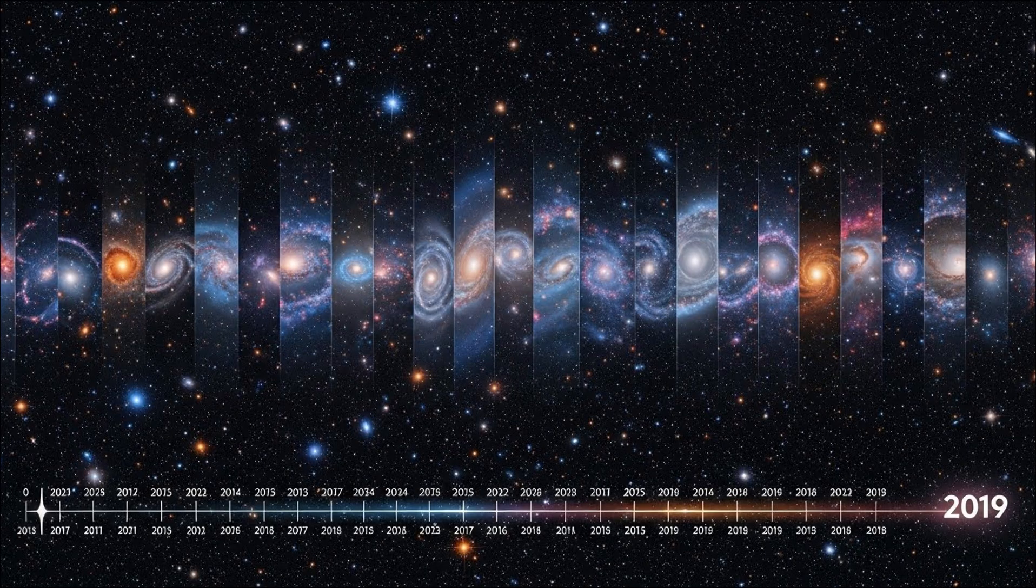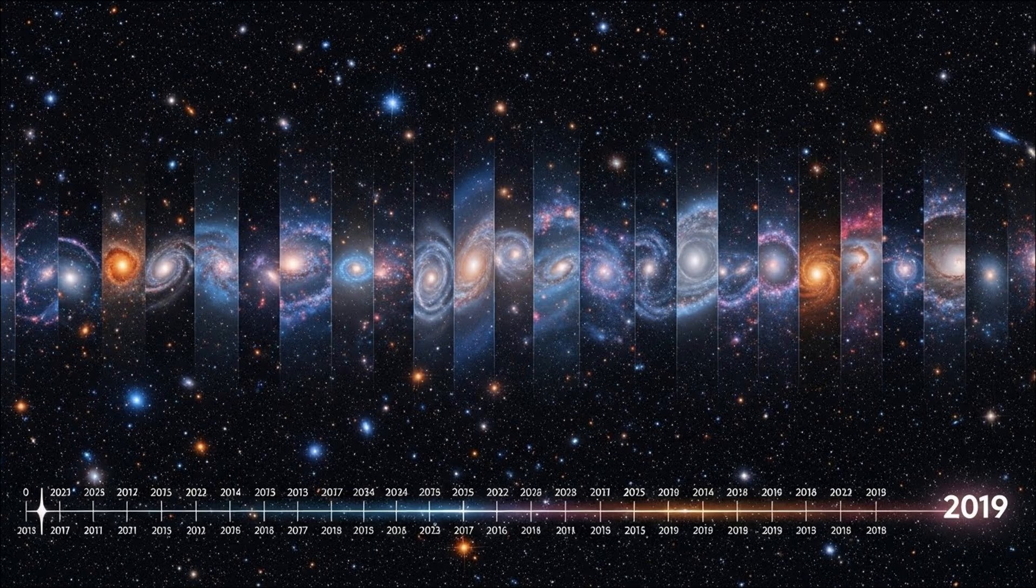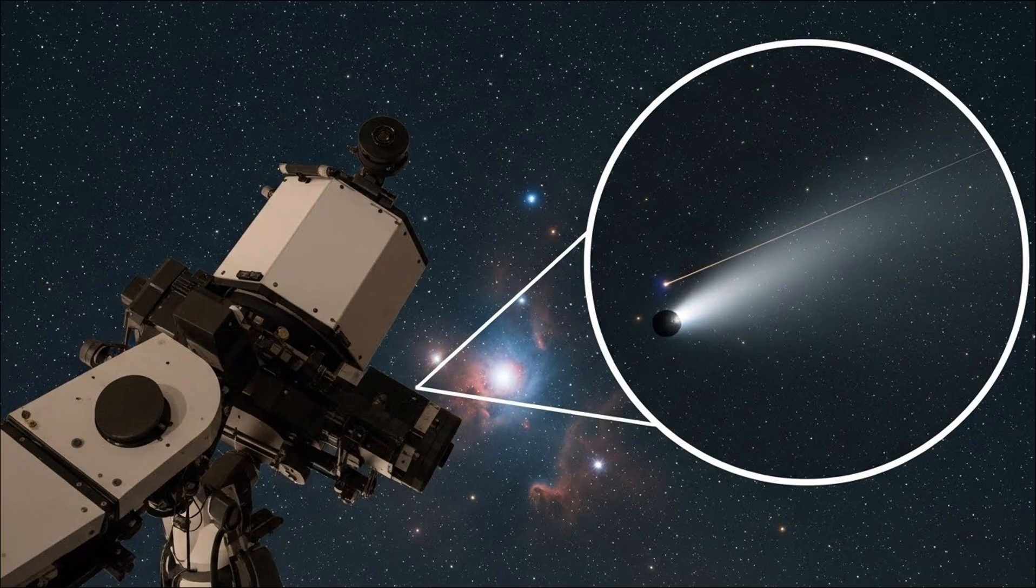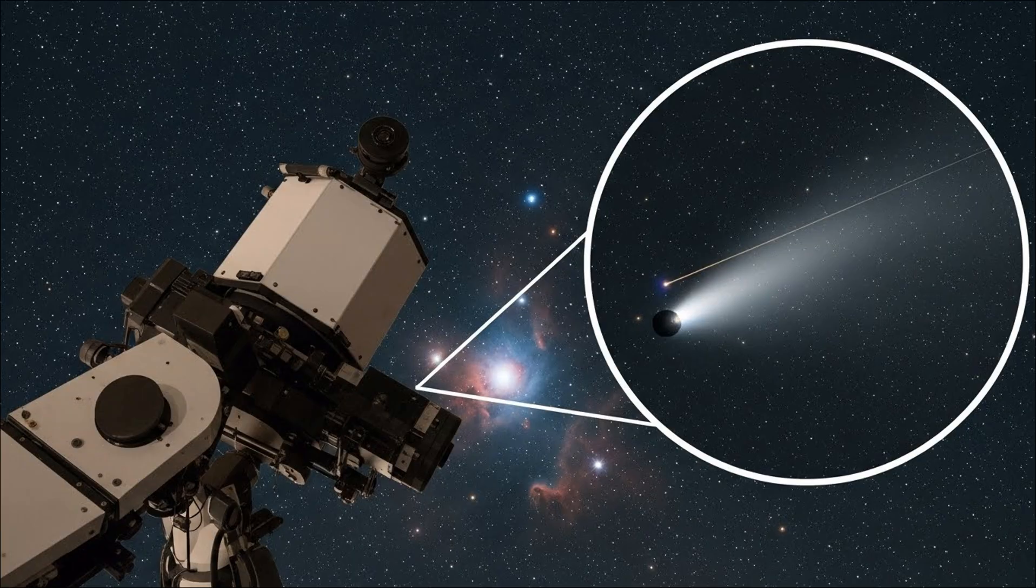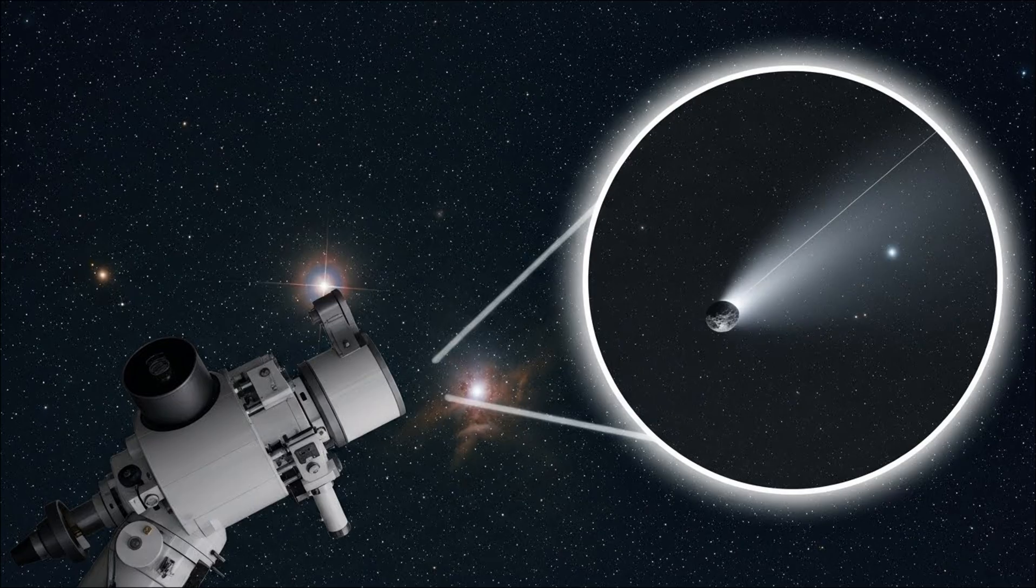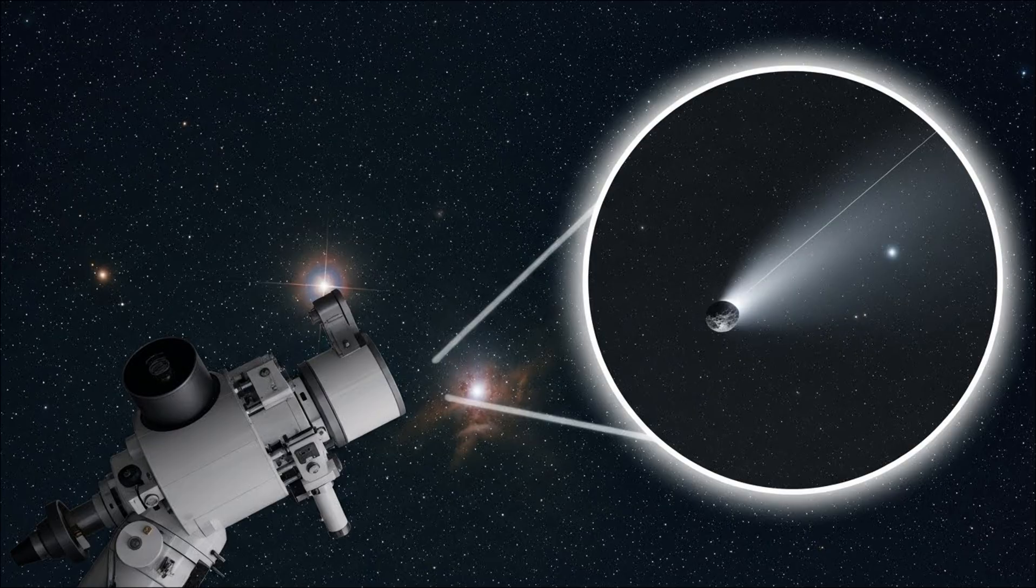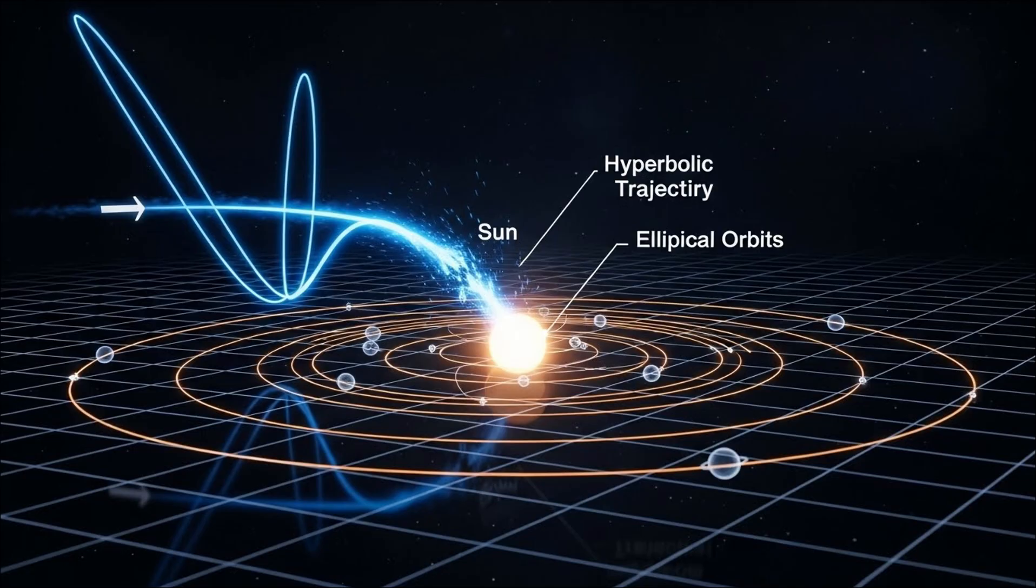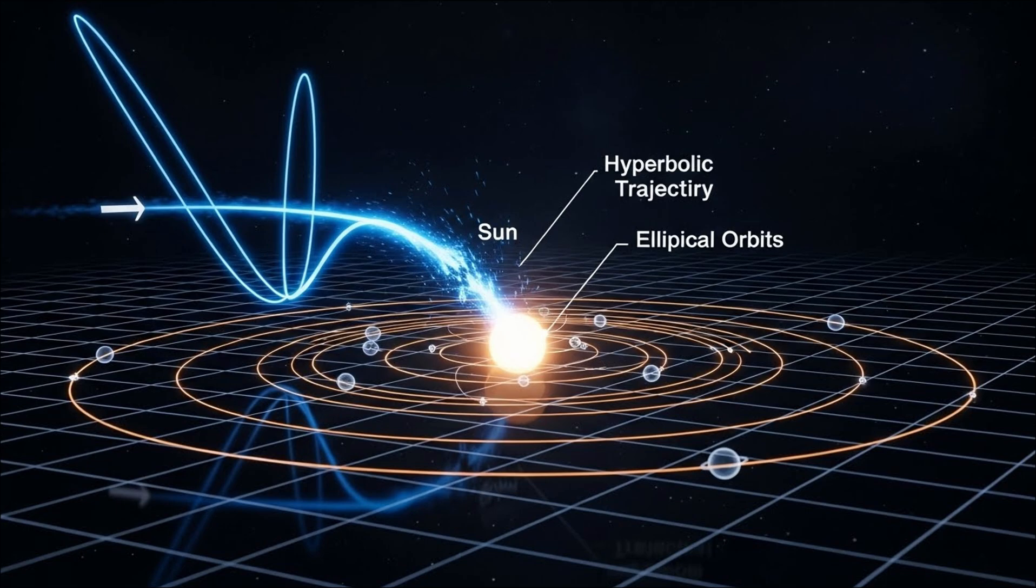To understand what happened, we need to go back to December 2019. That's when astronomer Gennadyi Borisov, using a telescope he built himself in Crimea, noticed something unusual in the night sky. It was moving fast, far faster than typical comets or asteroids that orbit the sun. And its trajectory was wrong—not elliptical, not bound to our star. Hyperbolic.